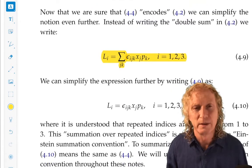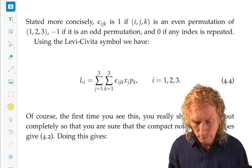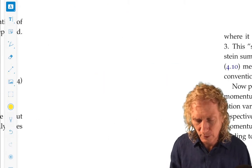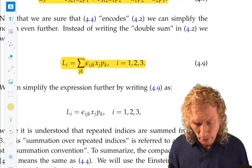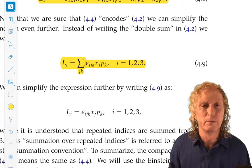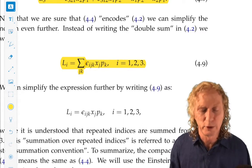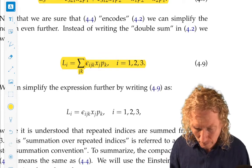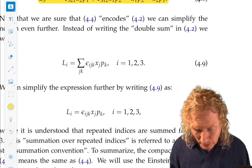Sometimes, when you have two different summation symbols, and I've done this so far in the course, you just lump the two together with both symbols, j and k, underneath it. But, really, if you stare at this, you're summing over the repeated indices.